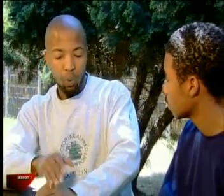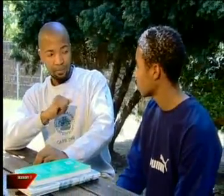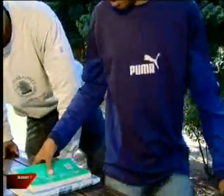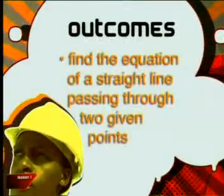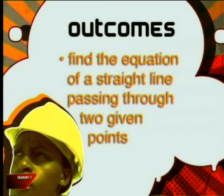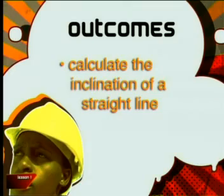You have worked with straight line graphs before, but now we want to use them in coordinate geometry. By the end of this lesson, you should be able to work out the equation of a straight line passing through two given points, and you should be able to calculate the inclination of a straight line.